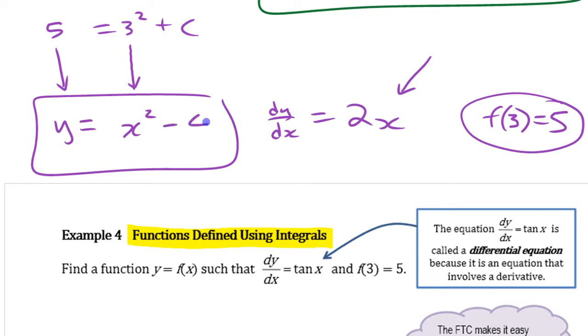So you could come up with a function that way if you happen to know an antiderivative of this. x squared is an antiderivative of that. x squared minus 4 is an antiderivative of that. This is an antiderivative where it happens to have this.